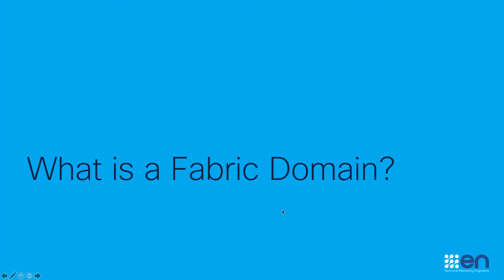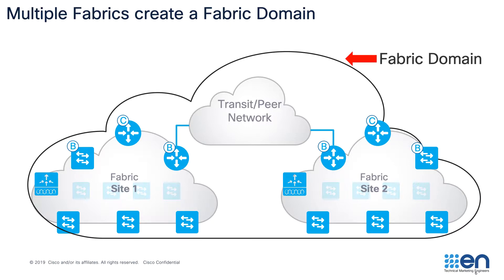A Cisco SD Access fabric domain is basically a hierarchical representation of fabric sites managed by Cisco DNA Center controller. A fabric domain can consist of one or more individual fabric sites connecting via a transit, which is used for inter-site communication. A fabric domain should be able to scale horizontally by having state-specific information in each of the sites.